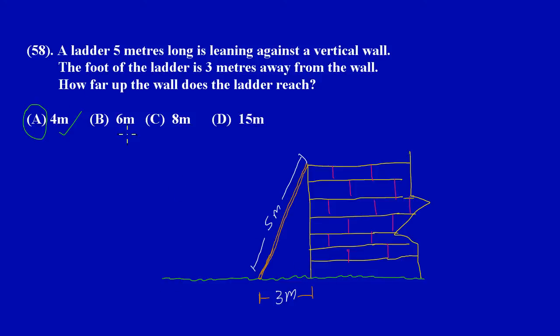The vertical wall meets the horizontal ground at an angle of 90 degrees. Basically what you have here is a right angle triangle. Given that we have a right angle triangle and we have the length of two sides, then we can use Pythagoras theorem to find the length of the missing side.